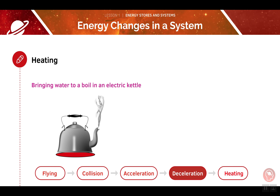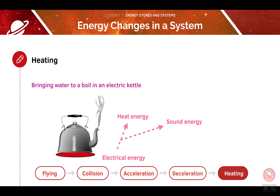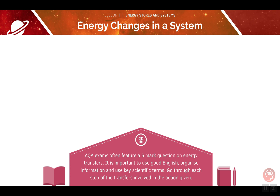We can use the example of a car to demonstrate both acceleration and deceleration. In deceleration, the kinetic energy of the car will be converted into other forms of energy, such as sound energy and thermal energy. Finally, we'll look at the energy transfers involved in heating. Using the example of a kettle, the kettle converts electrical energy into thermal energy, which is our desired product used to heat the water. However, not all of the electrical energy is transferred usefully — some is wasted as sound energy. You should be able to apply this knowledge to six-mark questions in AQA exams.